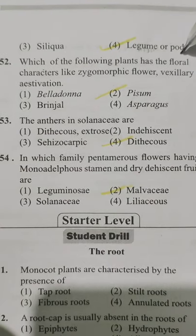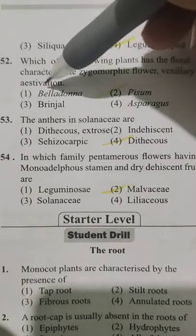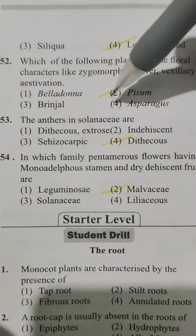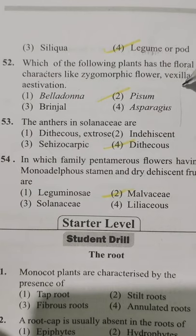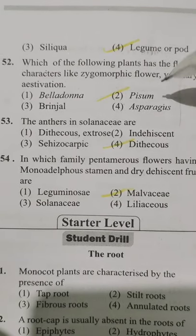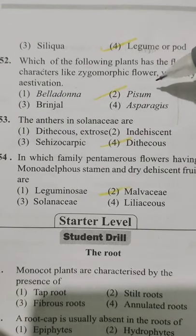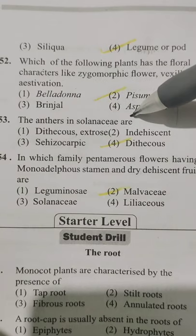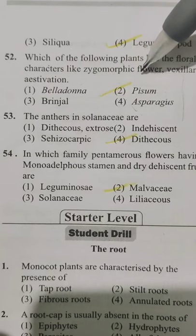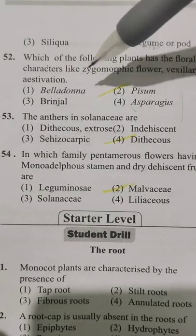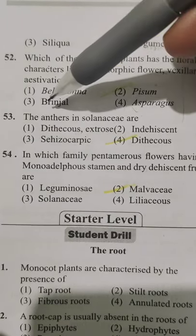Which plant has floral characters like zygomorphic flower and vexillary aestivation? Option 1 Belladonna, Option 2 Pisum, Option 3 Brinjal, Option 4 Asparagus. A zygomorphic flower can be divided into two equal halves only in a single vertical plane — this is the characteristic feature of the Leguminosae family. The correct answer is Option 2, Pisum.